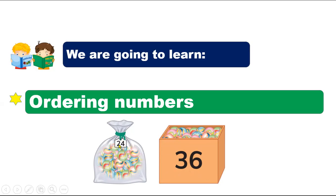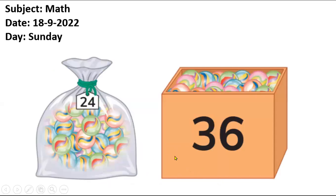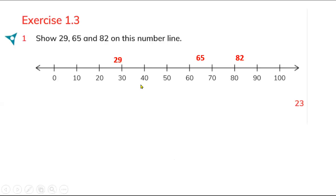In exercise 1.3 we start from question number one. You have to order the numbers 29, 65, and 82 on a number line. This number line starts from 0 to 100, and you have to find out where each number goes.